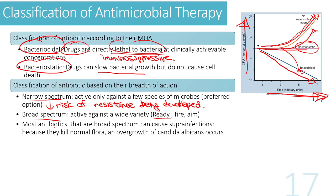Broad spectrum antibiotics can cause something called superinfection because they kill off normal flora, leaving a vacuum for overgrowth of a secondary infection. For example, an overgrowth of Candida albicans can occur in the absence of normal flora.